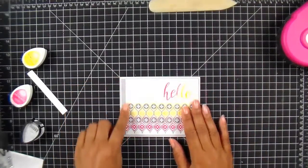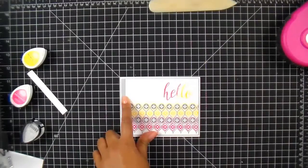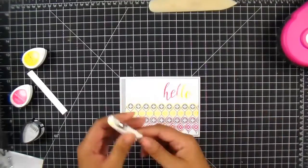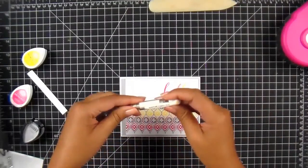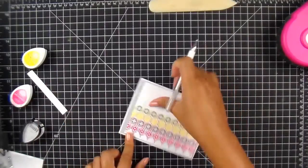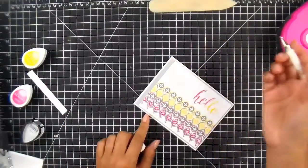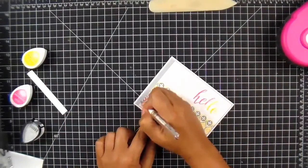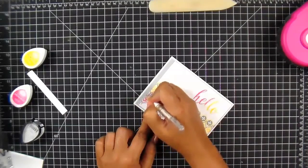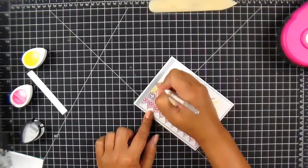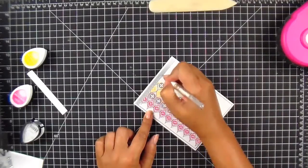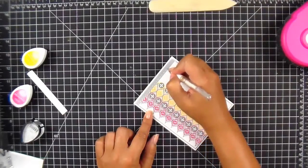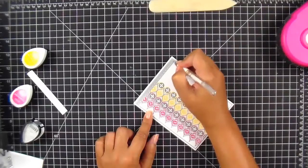And I guess just to go down the side, maybe I'll just do some faux stitching, which I'm just going to grab my white Uniball pen and I'll just do some dashes down the side. I always love faux stitching. I don't know what it is. I think it just adds that little bit of oomph to a card, you know what I mean?